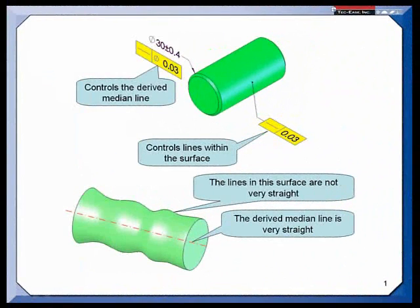This tip shows you how the standard was revised in 2009 to be a little more technically sound. Over the years, straightness has really been two different tolerances. When applied to a surface, it controls lines within the surface. When associated with the size dimension, it's controlling the axis, or more accurately, the derived median line.